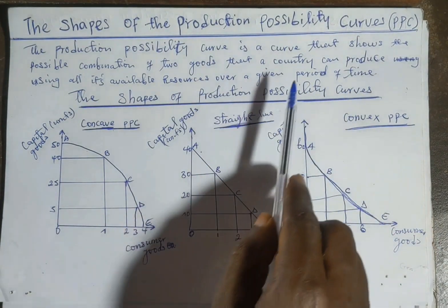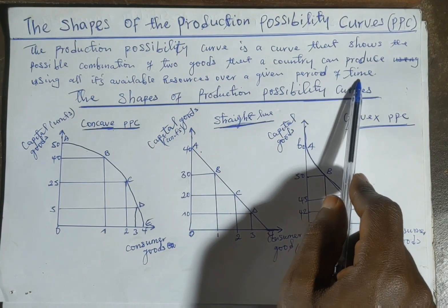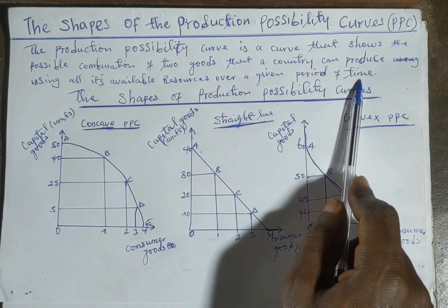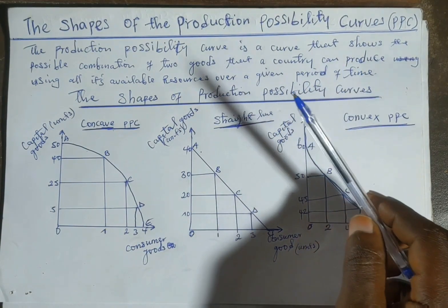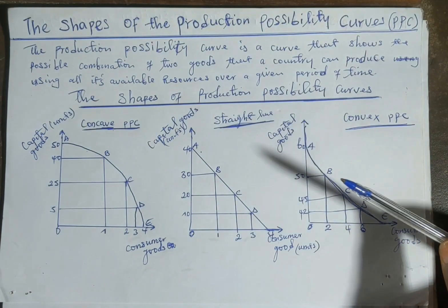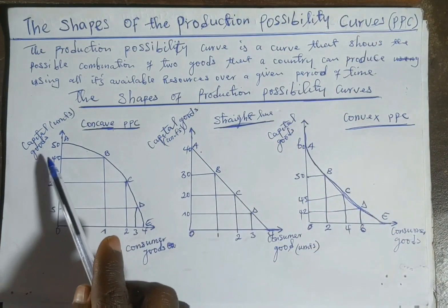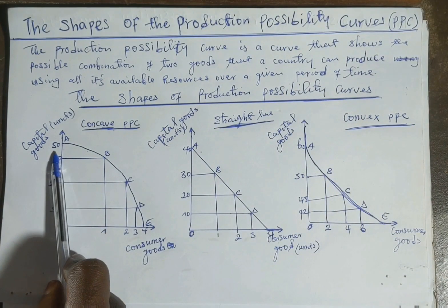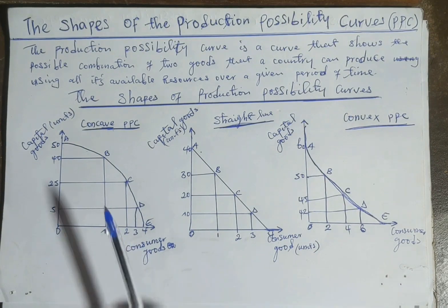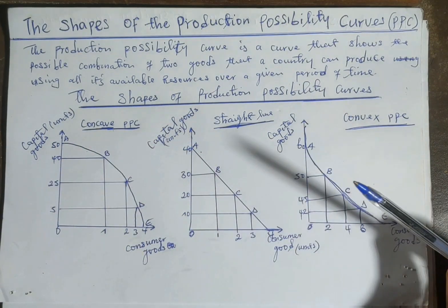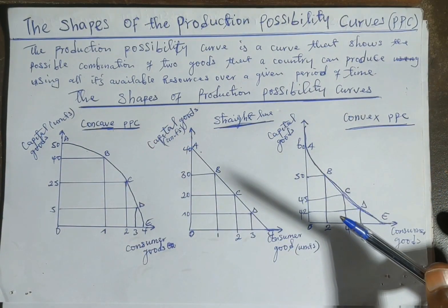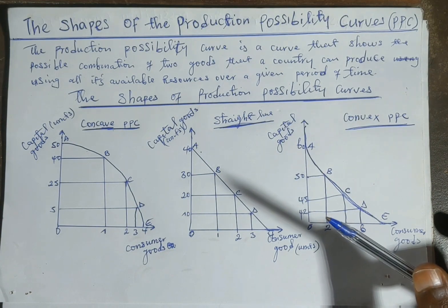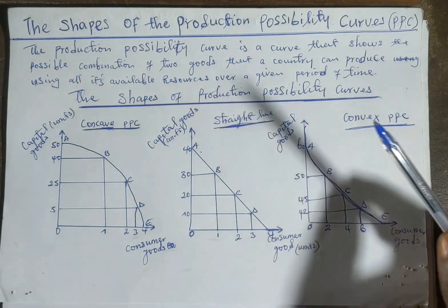This production possibility curve is drawn based on assumptions. First, only two types of goods are produced — for example, we have chosen capital goods and consumer goods. Second, the level of technology is constant, meaning that the method of technology and productivity do not change over time.